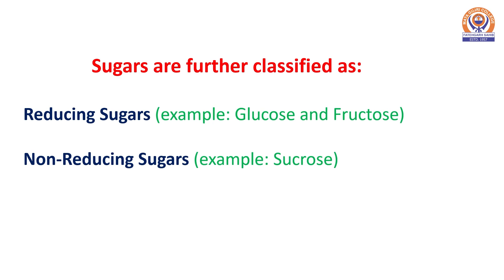Sugars are further classified as reducing sugars and non-reducing sugars. Examples of reducing sugars include glucose and fructose, while sucrose is an example of a non-reducing sugar.